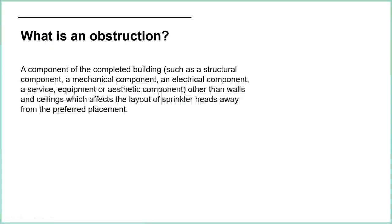First of all, we need to look at what an obstruction is. My own definition: an obstruction is basically anything which isn't a ceiling or a wall which is getting in the way of sprinkler head placement — a component of the completed building such as a structural, mechanical, electrical, service equipment, or aesthetic component, other than standard walls and ceilings, which affects the layout of sprinkler heads away from their preferred placement.